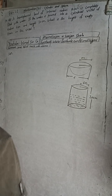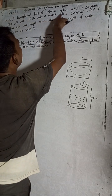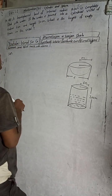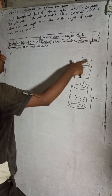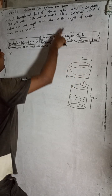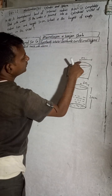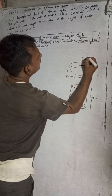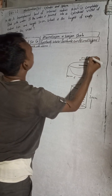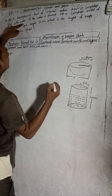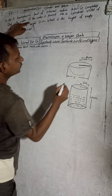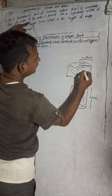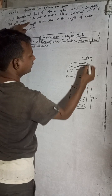A hemispherical bowl of internal radius 9 cm is completely filled with water. This is a hemispherical bowl. Internal radius means the inside radius, which is 9 cm. The bowl is completely filled with water.